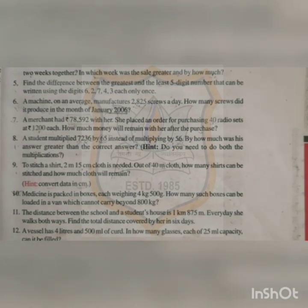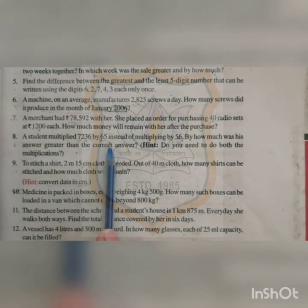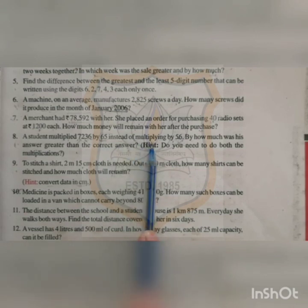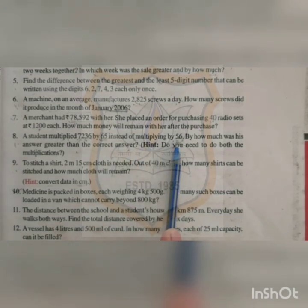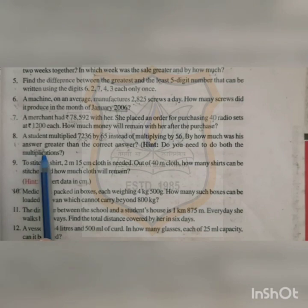Hello students, welcome to e-classes from PNMS Tree High School. We will continue with chapter number one, exercise 1.2, sum number eight. A student multiplied 7236 by 65 instead of multiplying by 56. By how much was his answer greater than the correct answer?